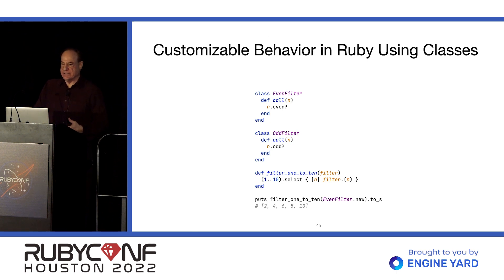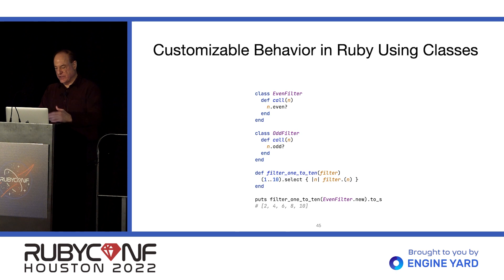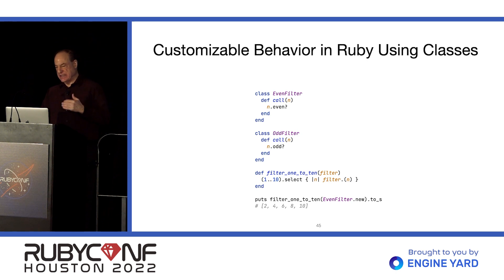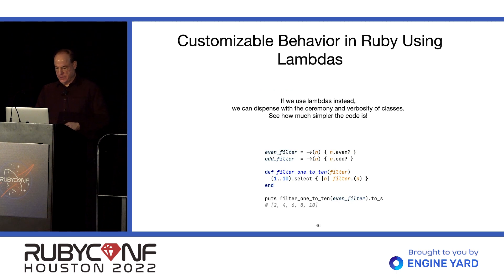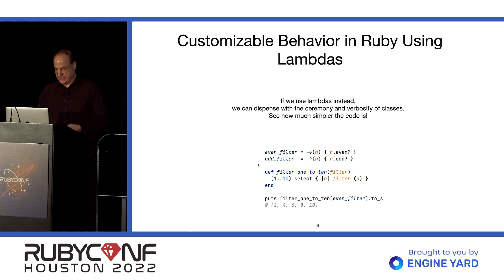For a lot of us coming from object-oriented languages other than Ruby, we're used to using classes for polymorphism. In Java, you'd need to create an interface defining the call method — a lot of verbosity. Compare that with lambdas: they're just so simple, and really good in cases where you just need something simple.